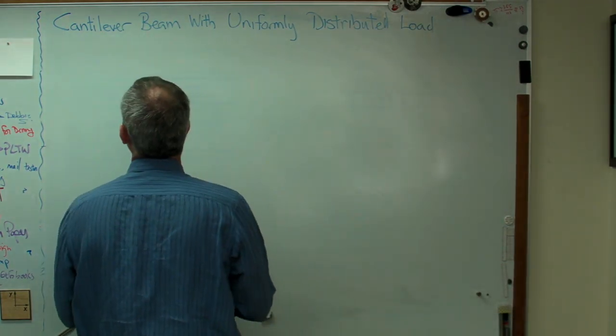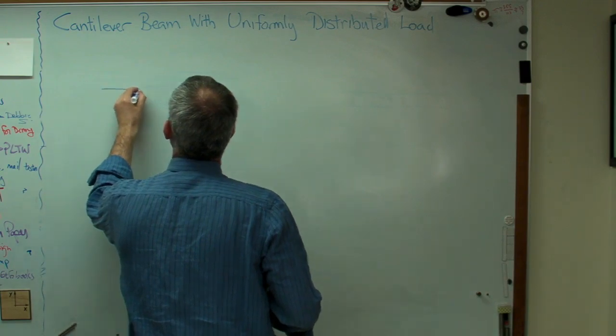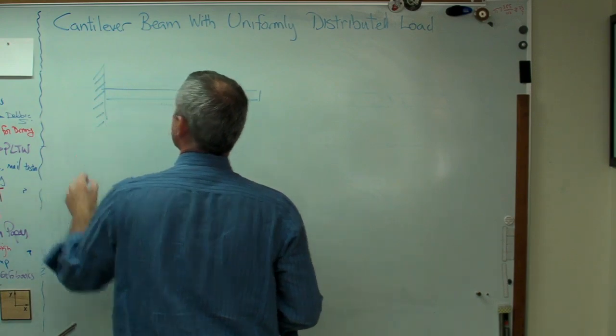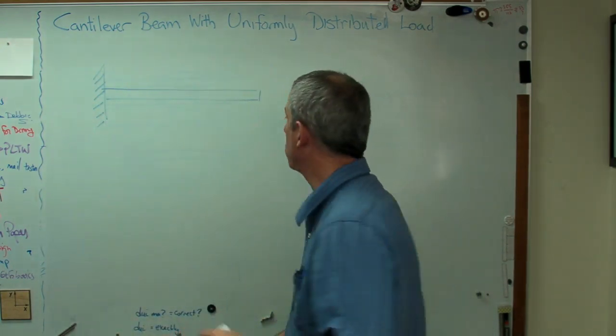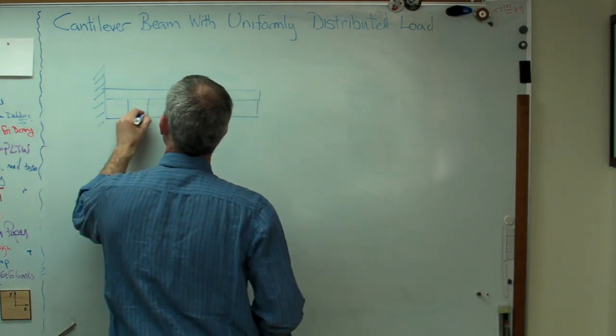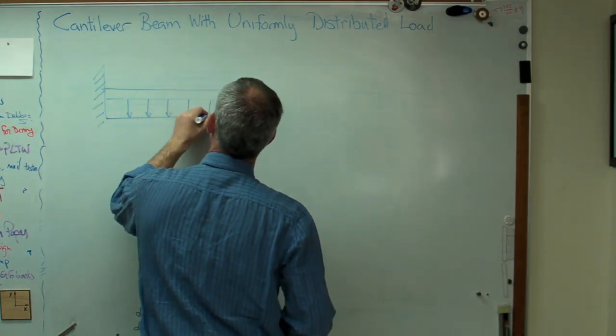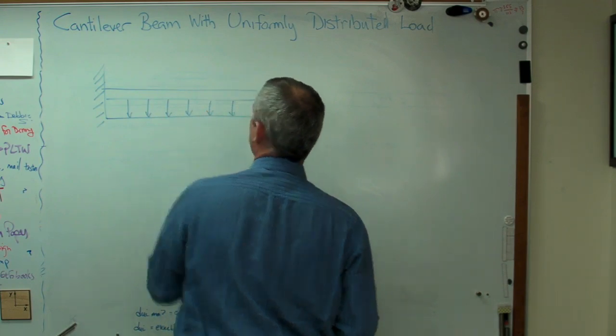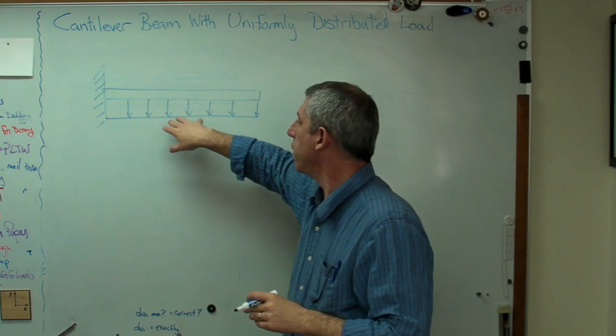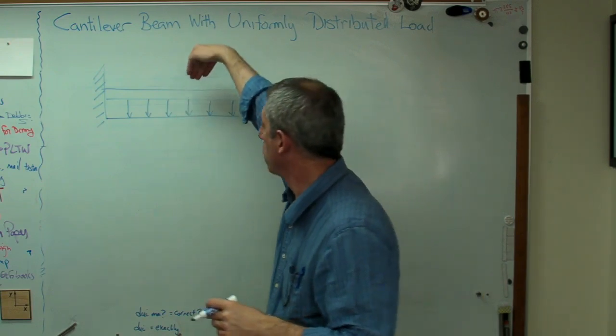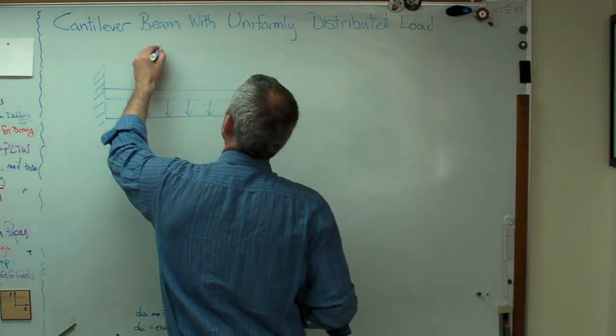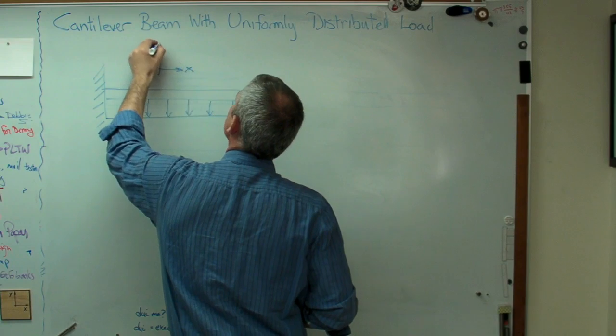Let's draw this, and there we go. That looks pretty good. Okay, cantilevered at the left end. Now we're going to put a distributed load on it here. You can just draw the distributed load above or below the beam as you choose. I find I have fewer problems when I draw the downward loads below the beam and the upward loads above the beam. It just makes a good visual cue, and I mess up less often.